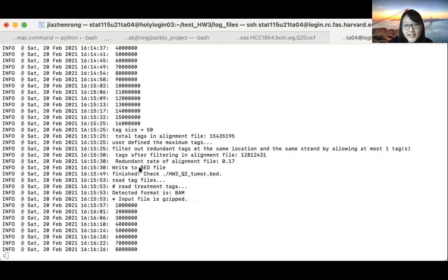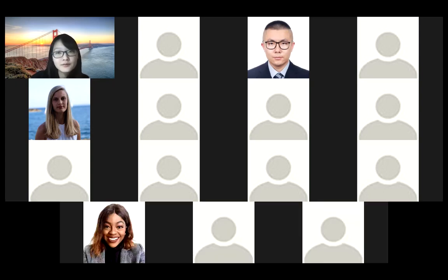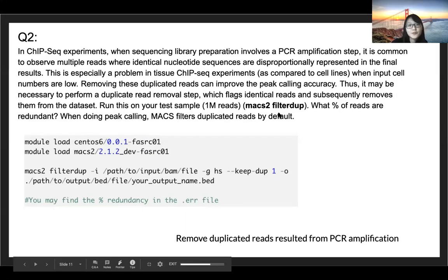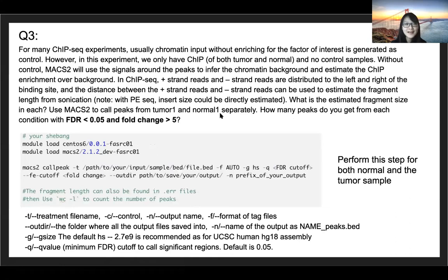We also ask what's the percentage of reads that are redundant. You can actually find that in your .err file. There will be a lot of lines printed. Let me show you guys in the terminal. There will be a line saying 'redundant rate of alignment file: 0.17', so that's the percentage of redundant reads in your BAM file. Even though I know this question is only for graduate students, for undergrads, in order to do Q3 and Q4, you also need to do Q2 as well.